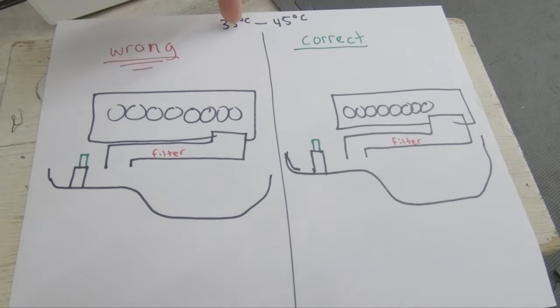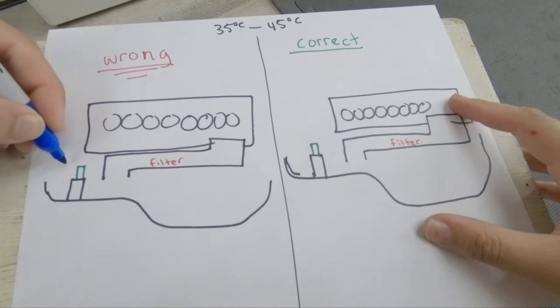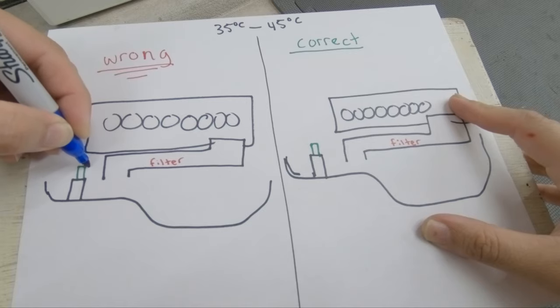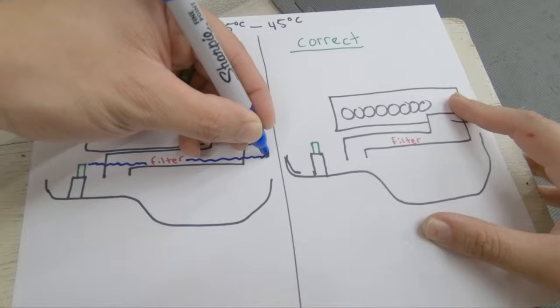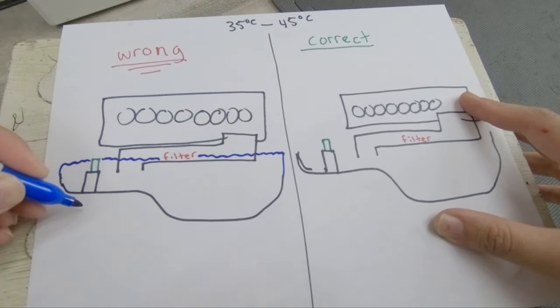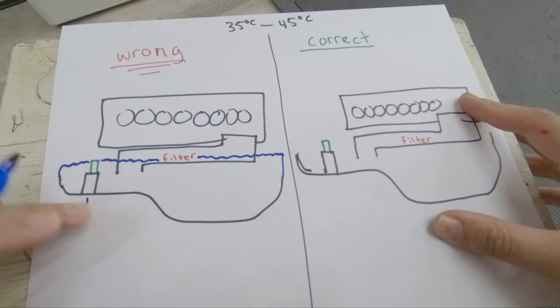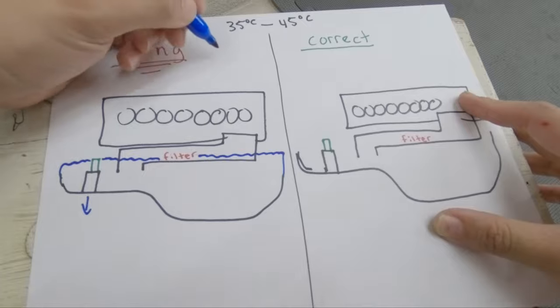So when I did it, I did it within the 35 to 45 degrees Celsius range, which you're supposed to do. What I did was I left the oil level about this level right here because it stopped pouring out from here. This is when I had the engine off, so I had the car off when I was doing it this way.